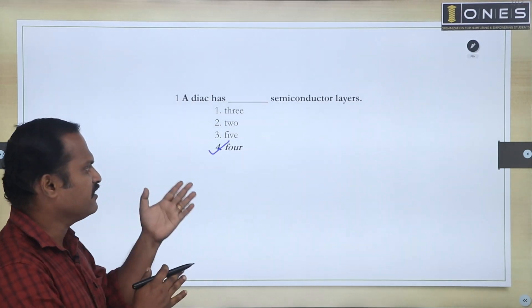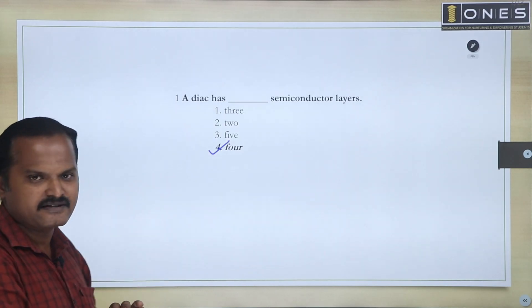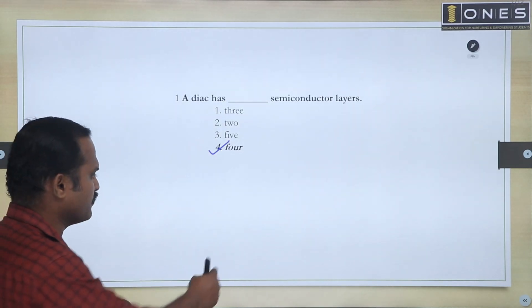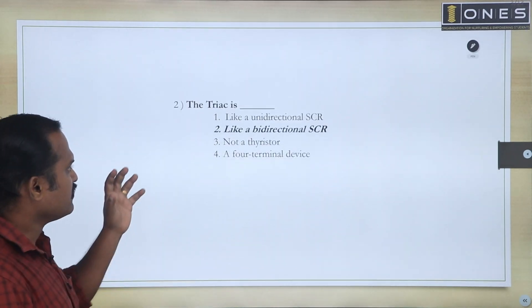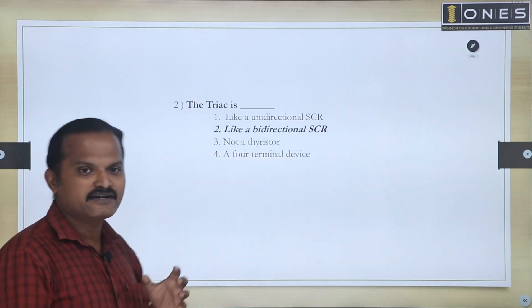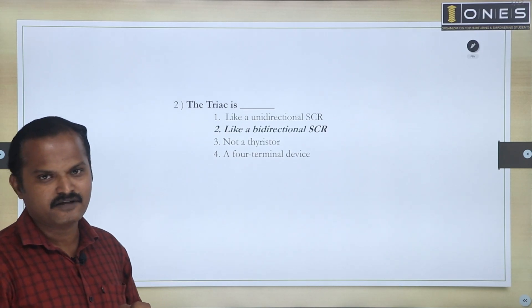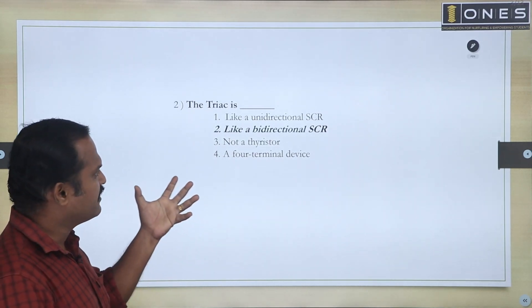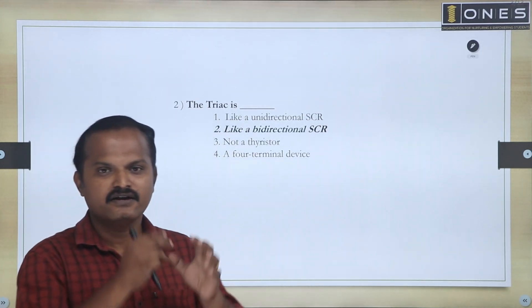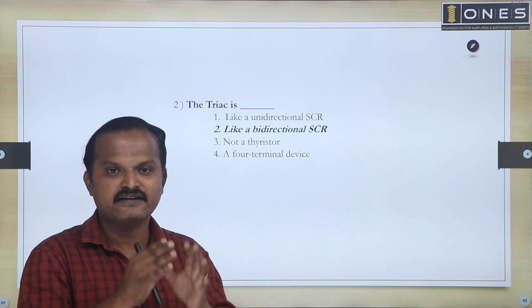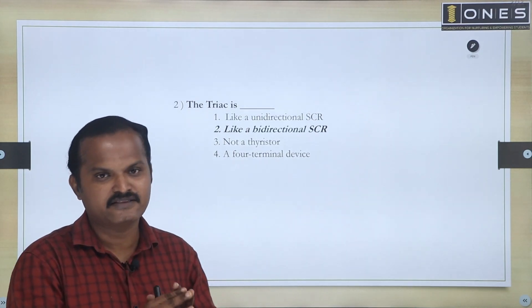DIAC is having four semiconducting layers. Now, the next question: TRIAC. A DIAC along with a controlled gate terminal becomes a TRIAC. What is a TRIAC?